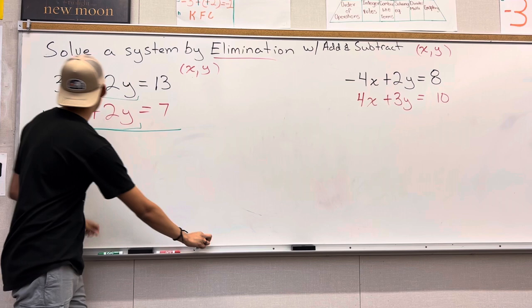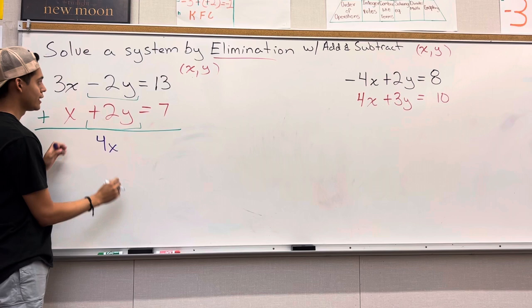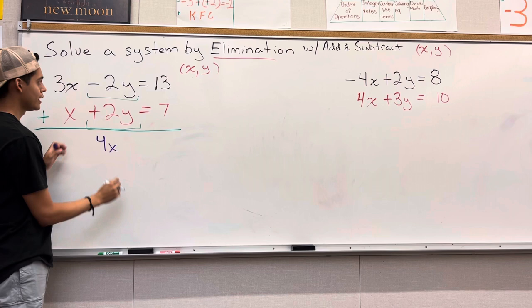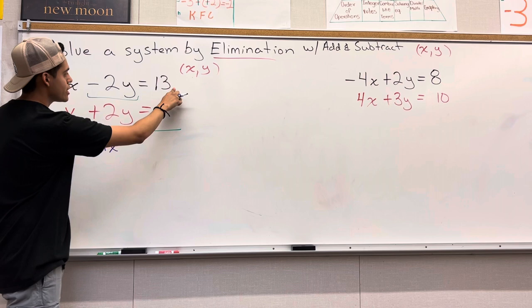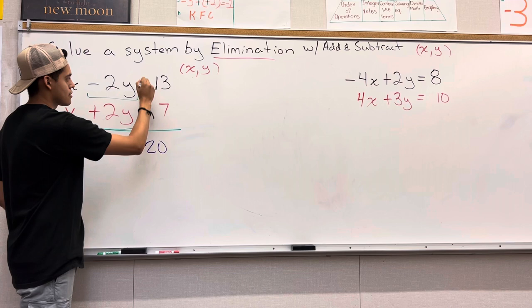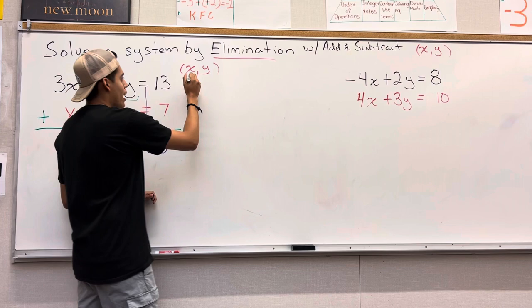So right here we have 3x plus x. We're going to have 4x. If it's negative 2y plus 2y, you're going to have 0y. Take it away. It doesn't matter. You can just go away because it's going to be 0. 13 plus 7 would give you 20. Don't forget, this is on the other side. It's going to be on the other side too of the equal sign.